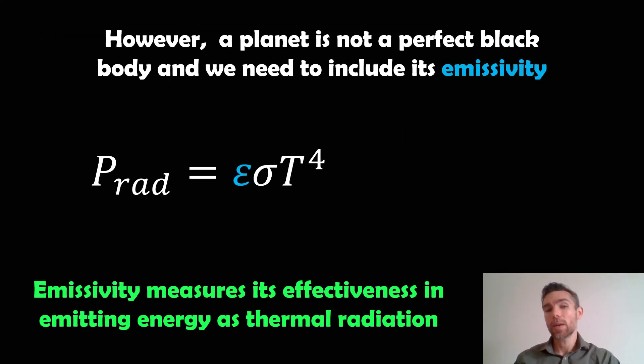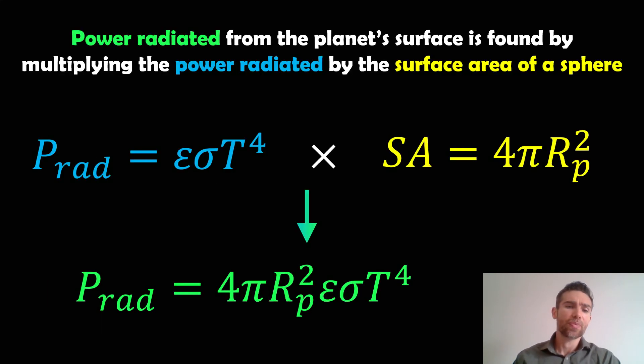However, same as with the albedo, a planet is not a perfect black body. So we need to include emissivity. This is a measure of its effectiveness in emitting energy as thermal radiation. There's a factor in there for how efficient it is at actually radiating energy. We need to include that because it's not going to be perfect.